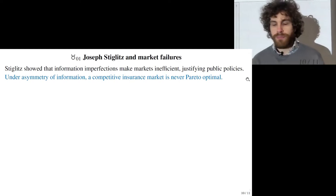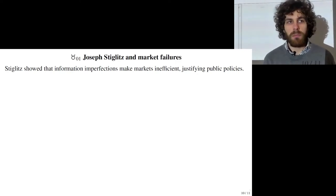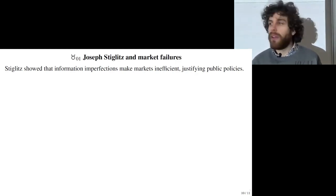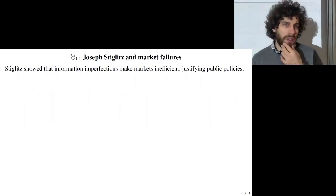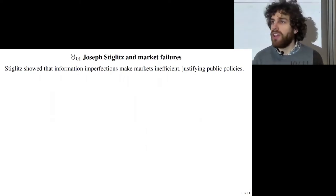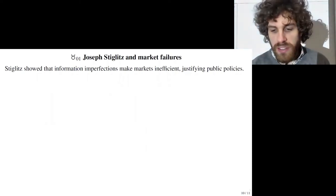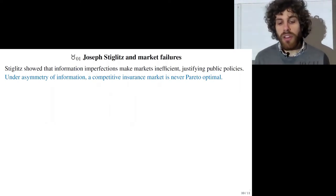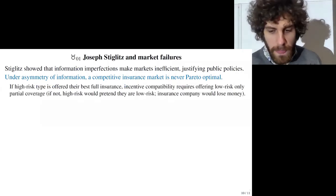Before Stiglitz, economists were aware that information was not perfect, but they thought the ways it was imperfect would not change by a lot the results of market efficiency — that it would just be small factors. But Stiglitz and others showed that even very small asymmetries of information can create huge distortions and invalidate market efficiency results. For example, under asymmetry of information, a competitive insurance market cannot be Pareto-optimal.